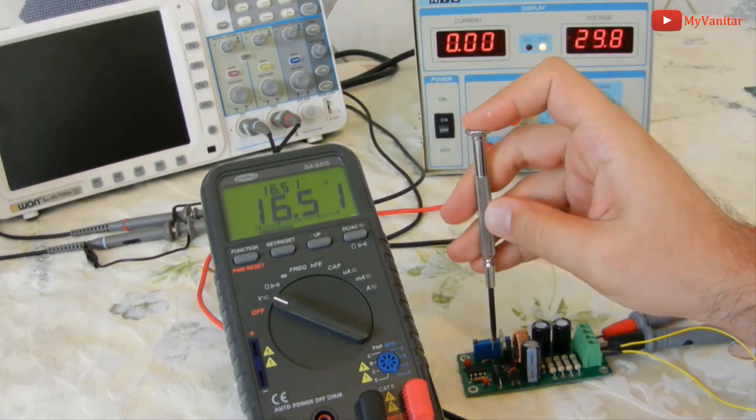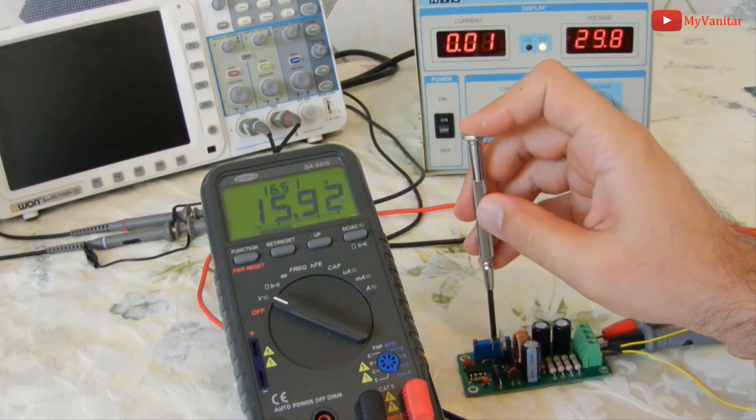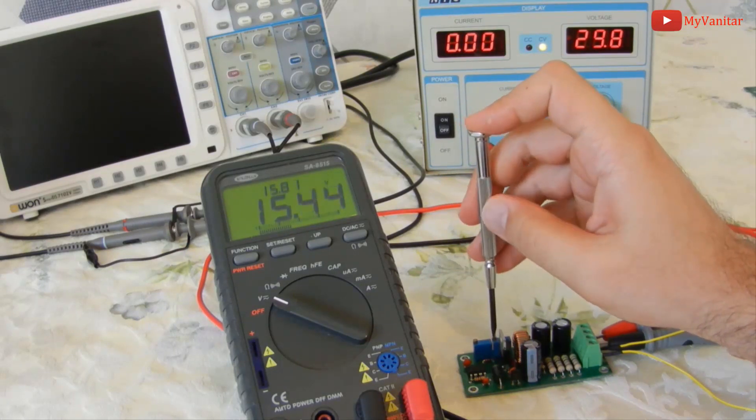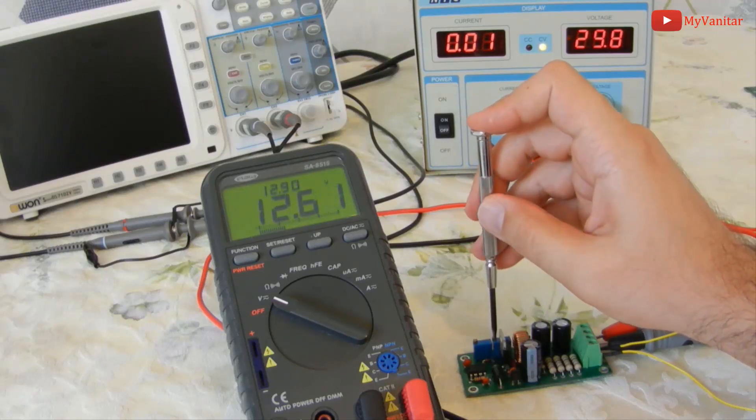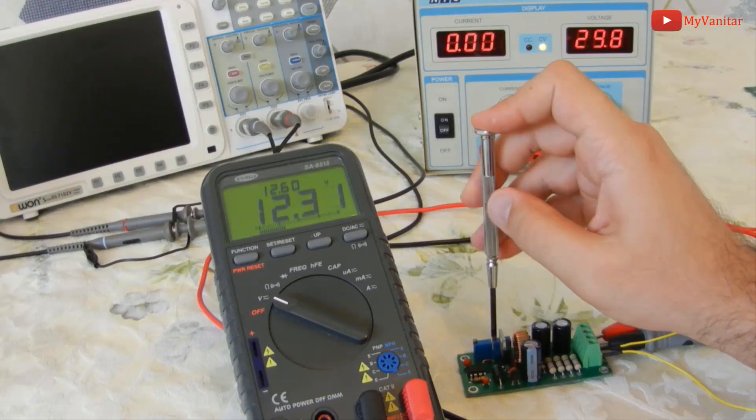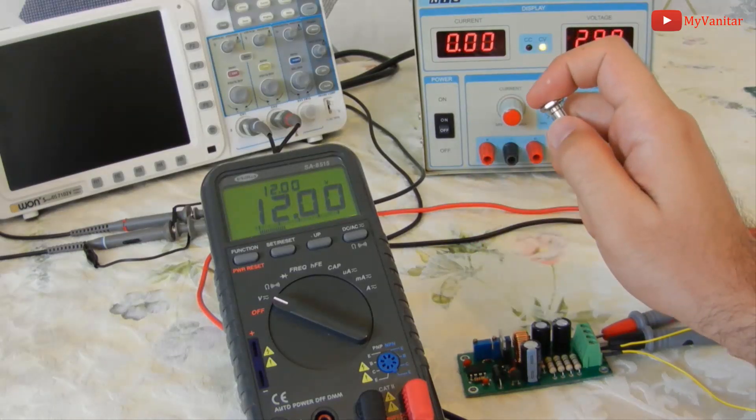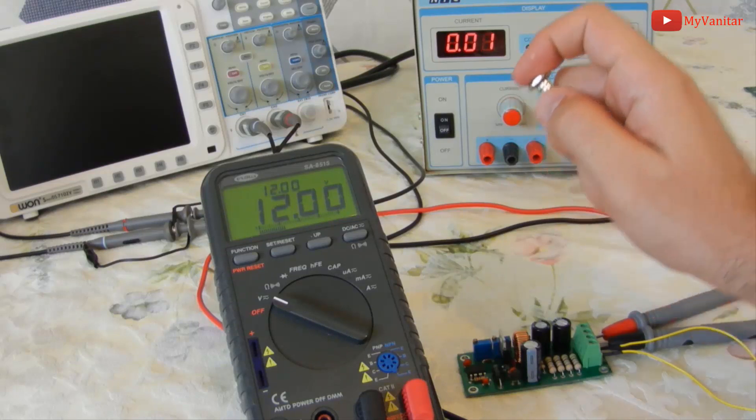Now it's time to set the output current limit. Let's assume we want to make a 12 volts and 1 amp supply. 1 amp is the current limit. Let's turn this potentiometer to reach 12 volts, as close as possible. Yes, it goes to 12.00. Now it's fixed, as close as possible.